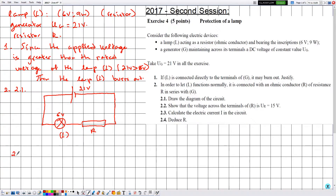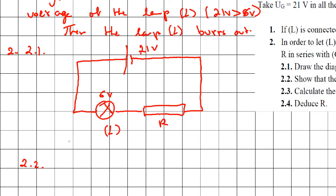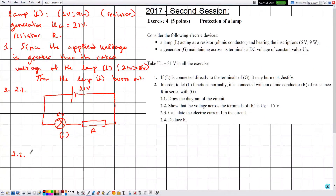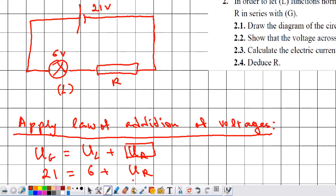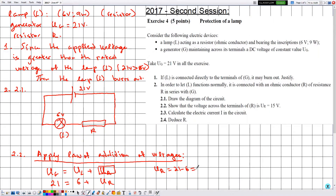For question 2.2, we need to show that the voltage across R, UR, equals 15 volts. We apply the law of addition of voltages. On one side we write the generator voltage UG, and on the other side the voltages across components: UG = UL + UR. With UG = 21 volts and UL = 6 volts, we get UR = 21 − 6 = 15 volts.